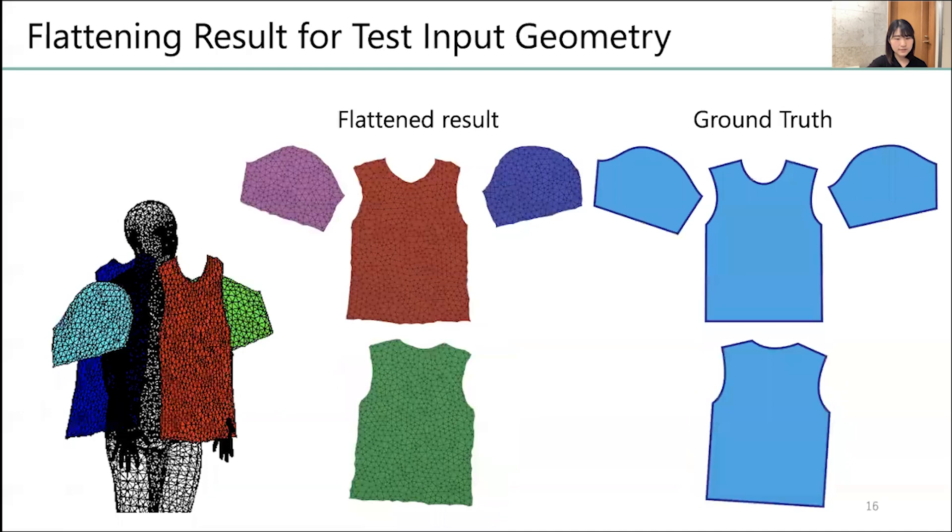These are the flattening results for test input geometry. The results on the synthesized test data are almost comparable to the ground truths.